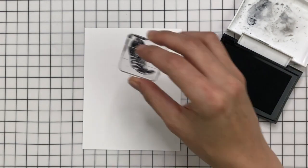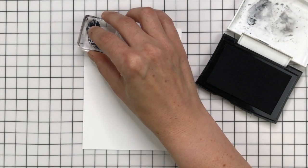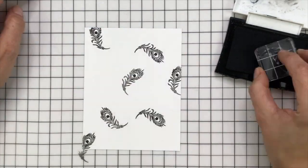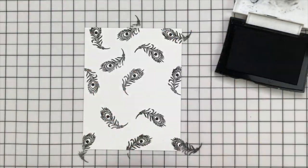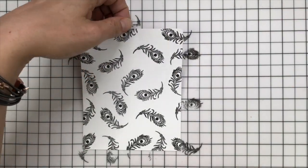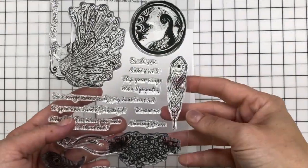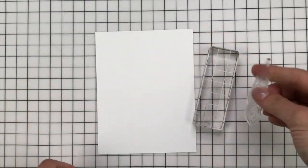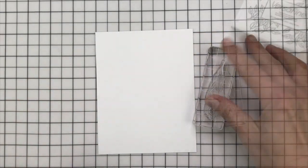Now to get started, I'm going to be creating a background using just plain black ink. This is Versafine Onyx Black Ink. It's super fine which is great for these very intricate stamps. And I'm using this one peacock feather and stamping it all over a panel of white cardstock, rotating it as I go to get more of a random feel.